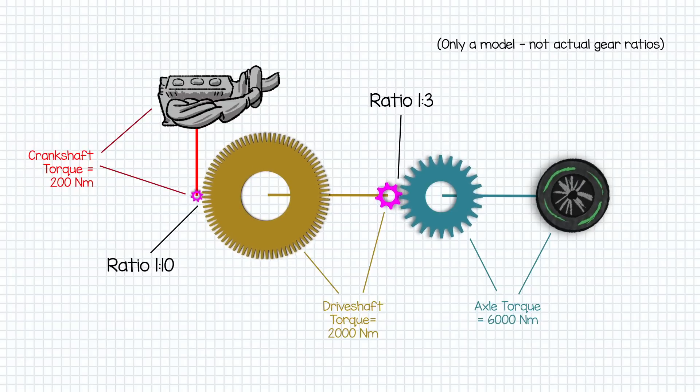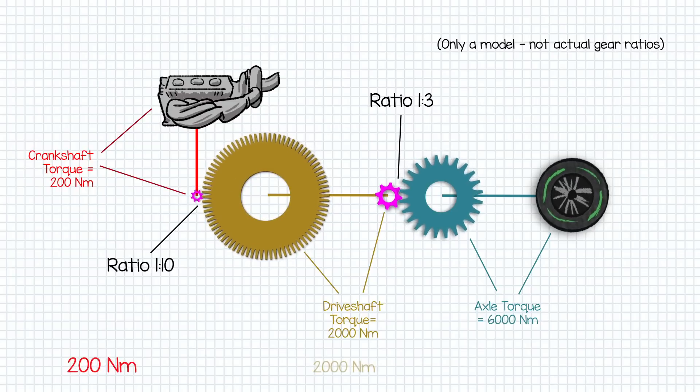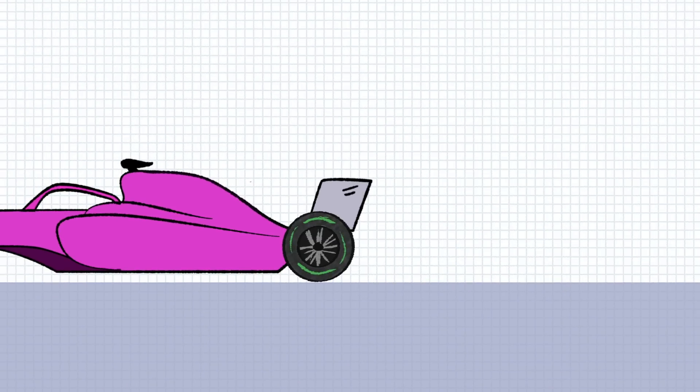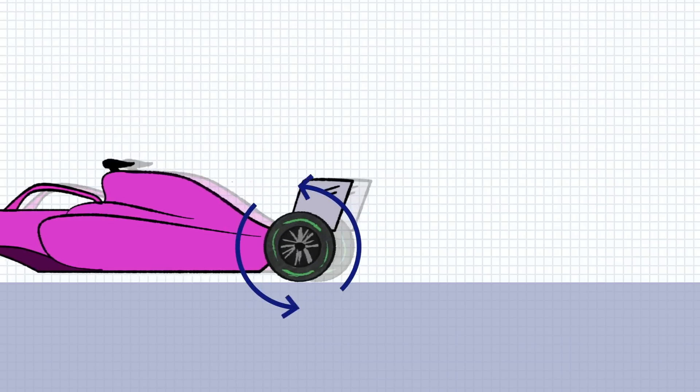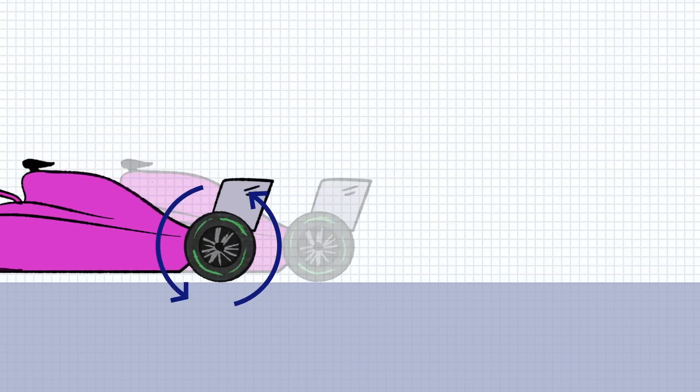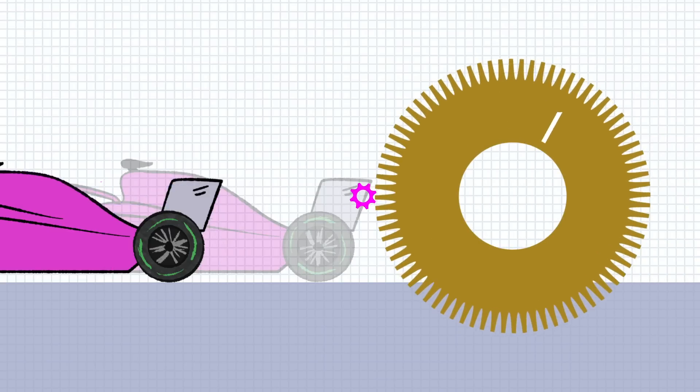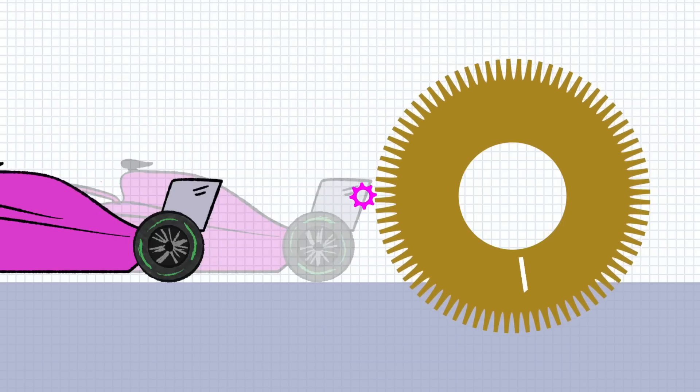And this is what a gearbox does, it takes the torque of the engine and it multiplies it up to different amounts depending on how much torque the wheels need. To accelerate from standstill the wheels need a lot of torque to get it going as it's a lot harder to get a system moving. That's why the ratio of the first gear is the biggest as it has the biggest multiplying effect. Once everything is moving though you need less and less torque to accelerate and maintain the wheel rotation speed.